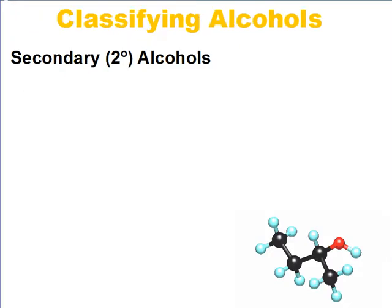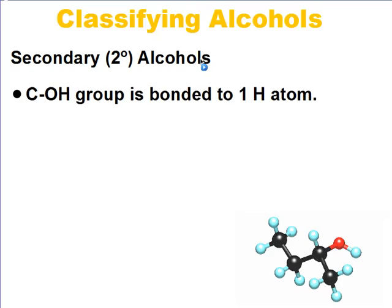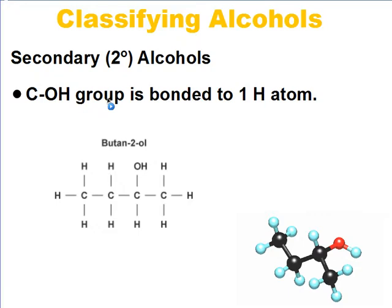If we consider secondary alcohols, we look at the C-OH group again and see how many hydrogens that carbon is attached to. In this case, we can see that this carbon is attached to just one hydrogen. With one hydrogen attached to that C-OH group, we classify this as a secondary alcohol.